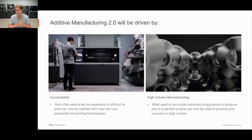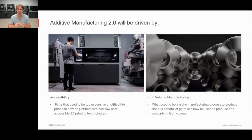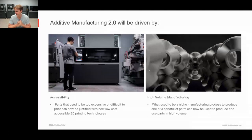The other driver of AM 2.0 is high-volume manufacturing. Metal 3D printing used to be a very niche process, really only used to produce maybe one or a handful of parts. But now we can use this technology to produce hundreds or thousands of parts per week to really justify end-use high-volume manufacturing.